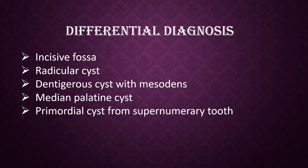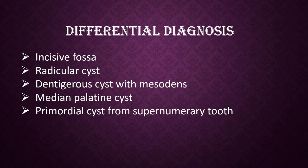Differential diagnosis. Incisive fossa: the shape of the fossa varies from round to oval to triangular to diamond to funnel shape. Radiolucency in the area less than 6 mm wide should be considered a normal fossa in the absence of associated symptoms. The incisive fossa is sharply defined at the lateral margins, in contrast to the cyst which has a well-defined boundary on all margins. Aspiration will help to distinguish between the cyst and the incisive fossa.